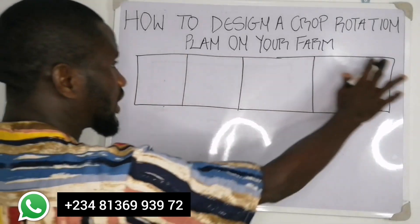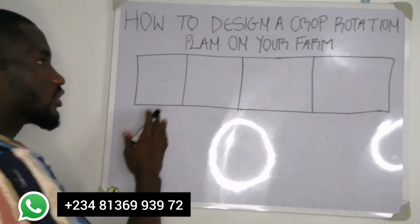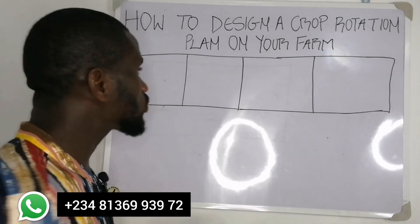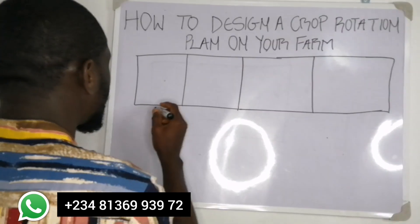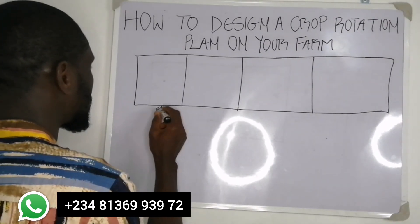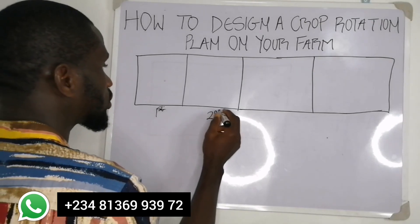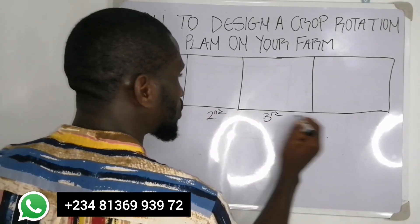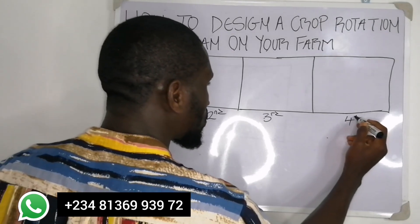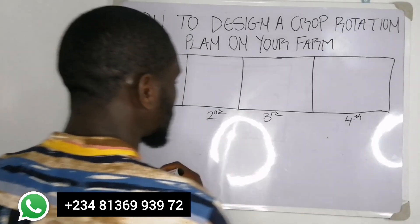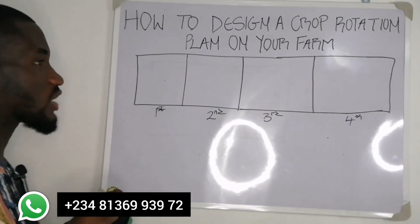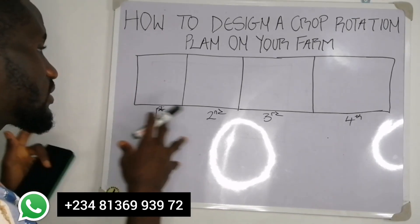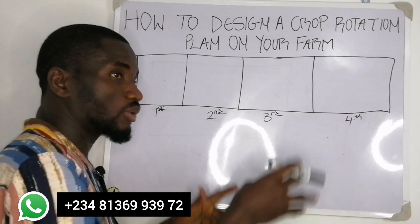Let me give a brief illustration on how you can practice crop rotation on your farm. Assuming this is your farmland — you now divide it into four. When you divide it into four, you have the first plot, the second plot, the third plot, and the fourth plot. What we are trying to do is apportion different crops to each of the plots.